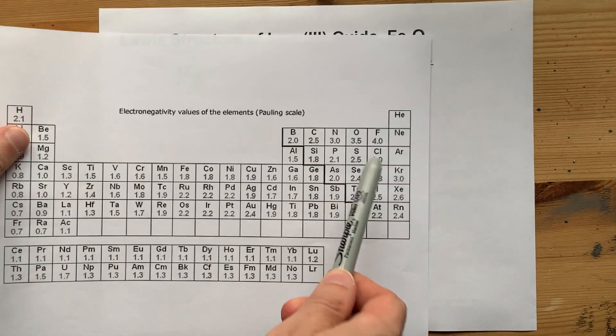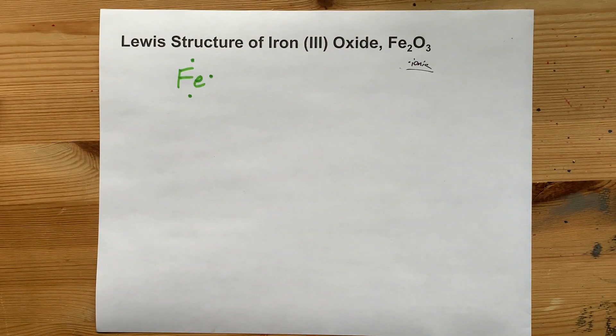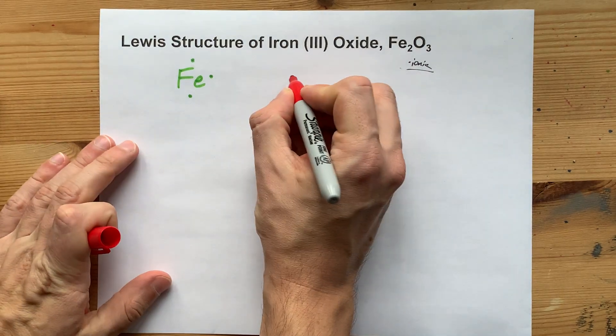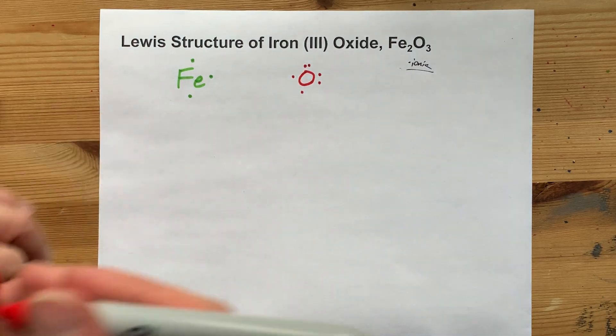Oxygen is in group 16 of the periodic table. All of these come with 6 valence electrons. So you can draw yourself an O with 1, 2, 3, 4, 5, 6 valence electrons.